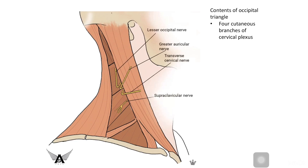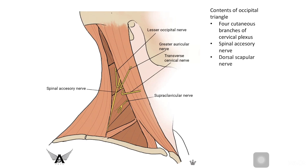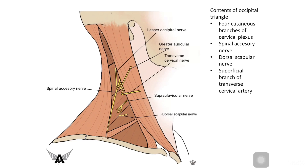The contents of the occipital triangle include the four cutaneous branches of the cervical plexus: the transverse cervical nerve, greater auricular nerve, lesser occipital nerve, and supraclavicular nerve. Additional nerves are the spinal accessory nerve and the dorsal scapular nerve.